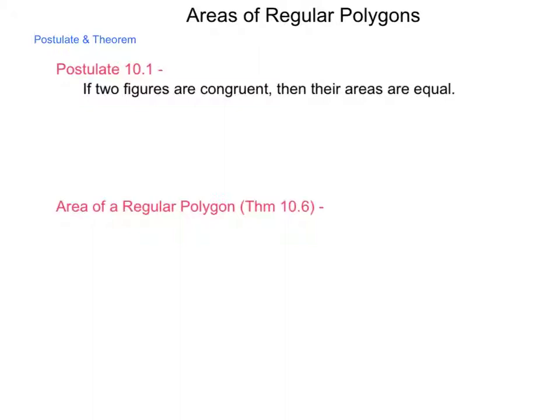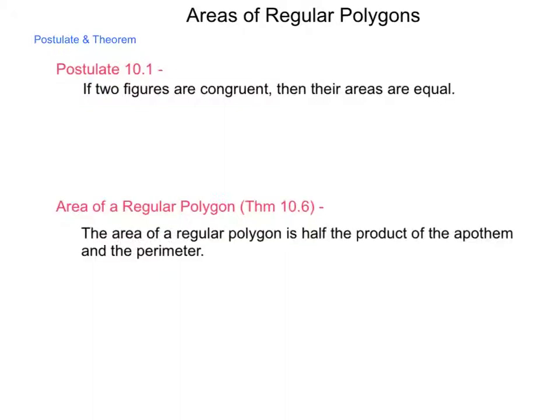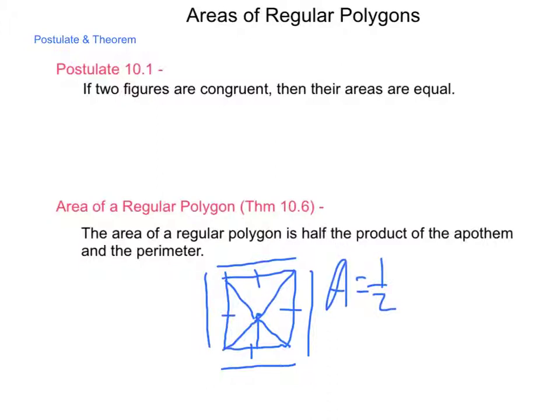Next, the area of a regular polygon, theorem 10.6, tells us the area of a regular polygon is half the product of the apothem and the perimeter. And the reason that this works, using a quick sketch, is if I have a regular polygon, let's take a square, if I can find that distance from the center out to one edge, the apothem, what I have is a right triangle. The area for a triangle is one-half base times height. So if I do this for each of the right triangles contained in here, all those bases added together would become the perimeter. So we have area equals one-half apothem perimeter.